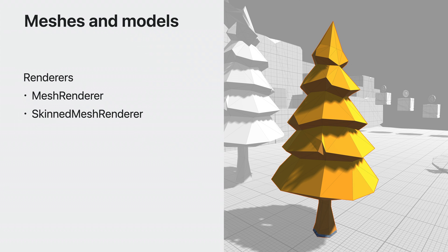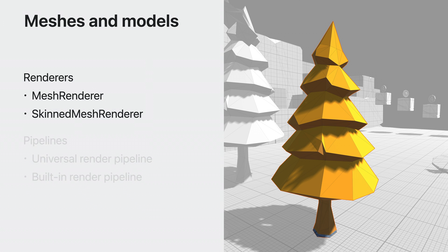Unity Mesh Renderers and Skin Mesh Renderers are supported and are the primary way of bringing visual content into real space. Rigged characters and animation are available. You can use either the Universal or the built-in render pipeline, and your content will be translated to RealityKit via Unity Polyspatial. Rendering features such as post-processing effects and custom pipeline stages are not available, as RealityKit performs the final rendering.